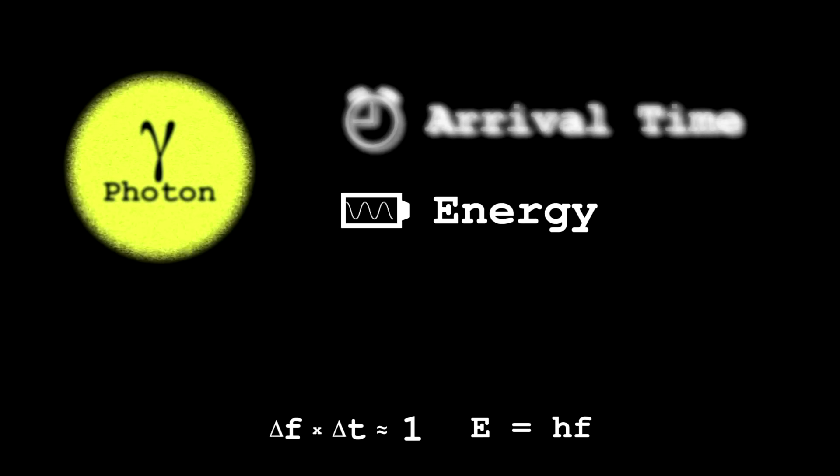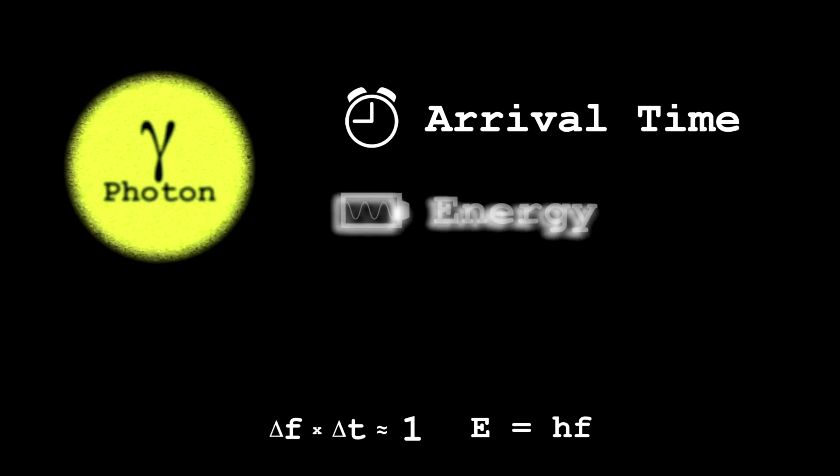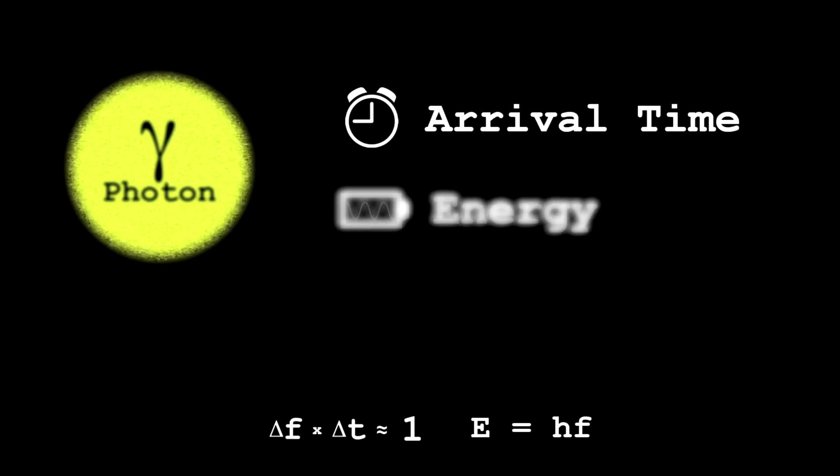We have this trade-off: we can either measure the energy of the photon arrival very accurately, but that means we can't predict exactly when it's going to arrive. Or we can very tightly force a photon to arrive at a particular time by switching the laser on and off very quickly, so we know exactly when the photon arrives — but because it was a very short pulse, there's a very large range of frequencies in that pulse, meaning the energy we record is very uncertain. You can't measure both the energy and the time of arrival of a photon simultaneously.